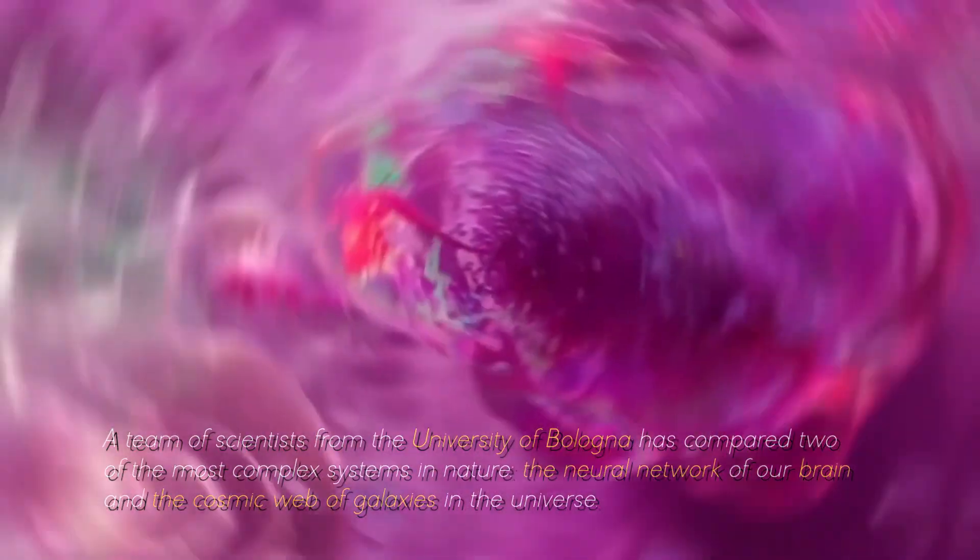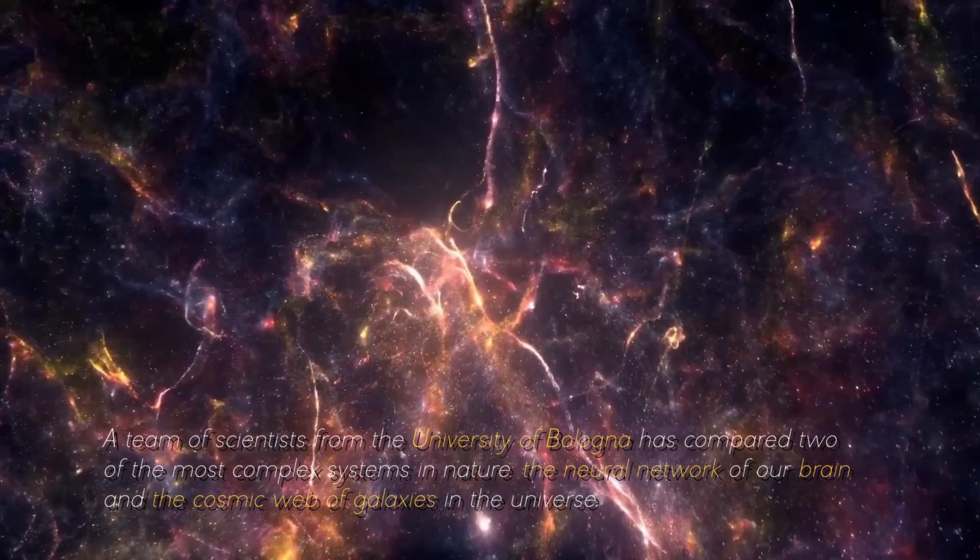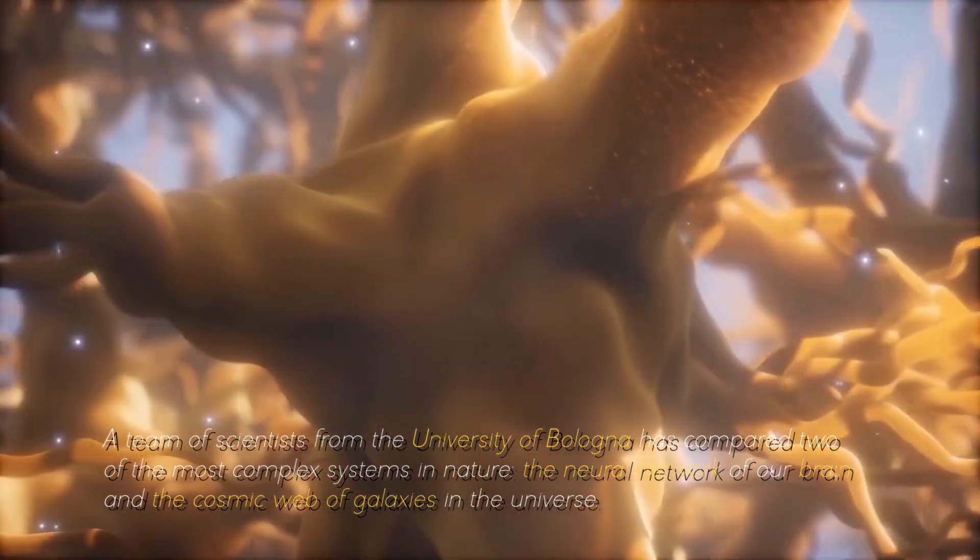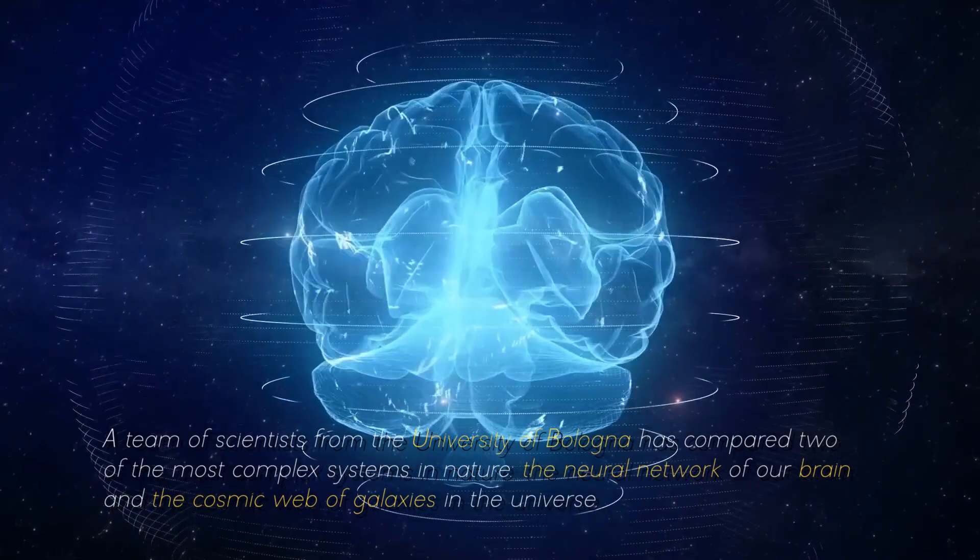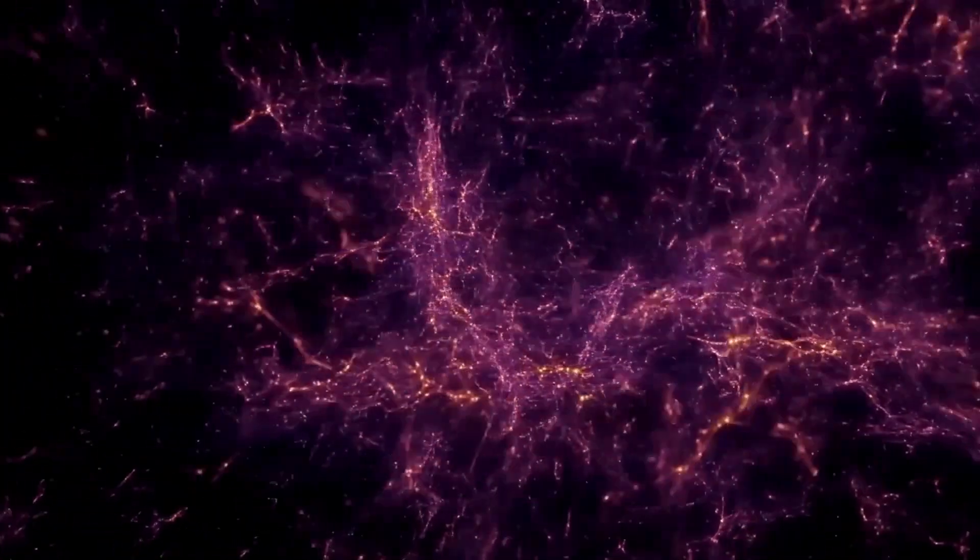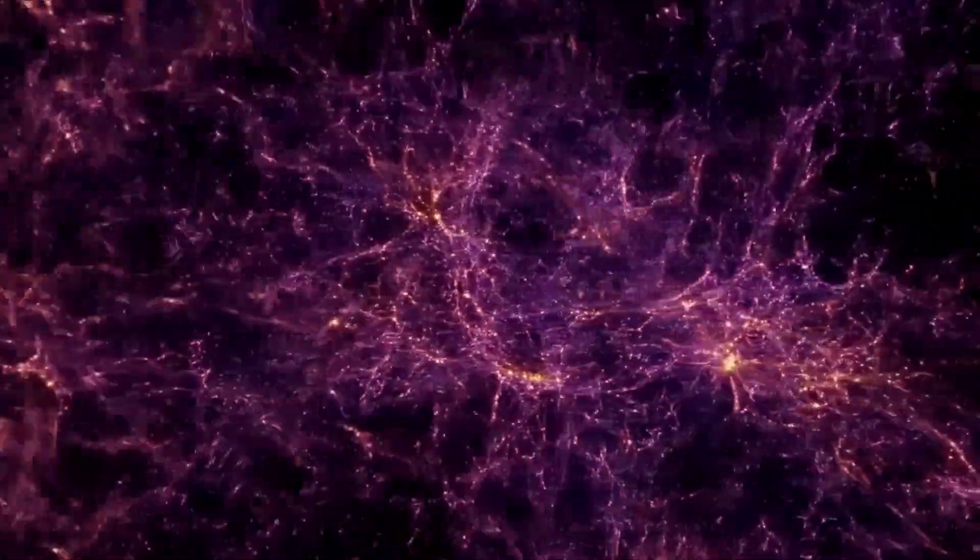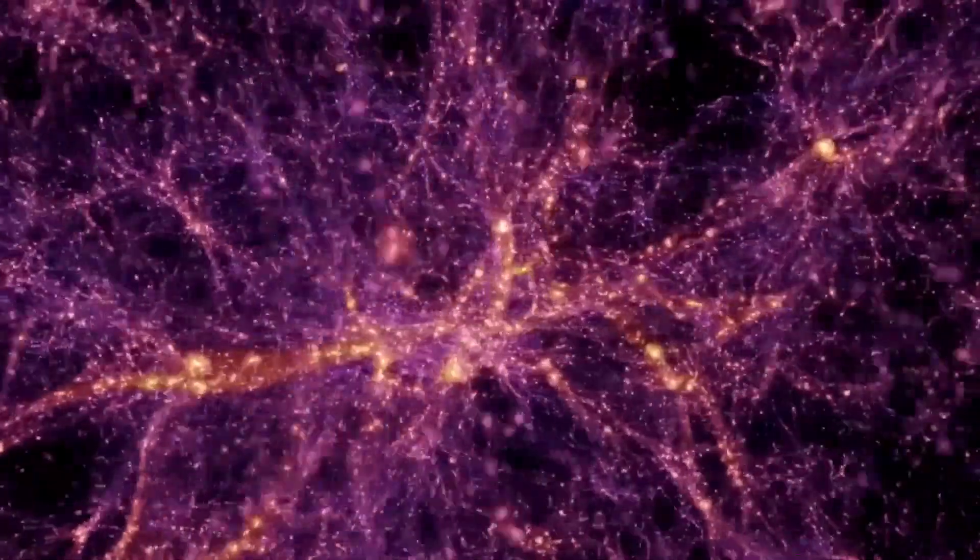A team of scientists from the University of Bologna has compared two of the most complex systems in nature, the neural network of our brain and the cosmic web of galaxies in the universe. What did they discover? That they are incredibly similar. And not just as they look if we compare a human neuron with a cluster of galaxies. There's more.